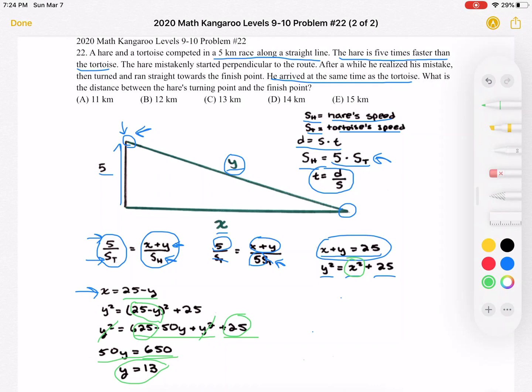So that distance we're looking for, the distance between the hare's turning point over here and the finish point, must be 13 kilometers. And this is answer choice C. Thank you so much for watching, and please subscribe if you would like to see more videos.